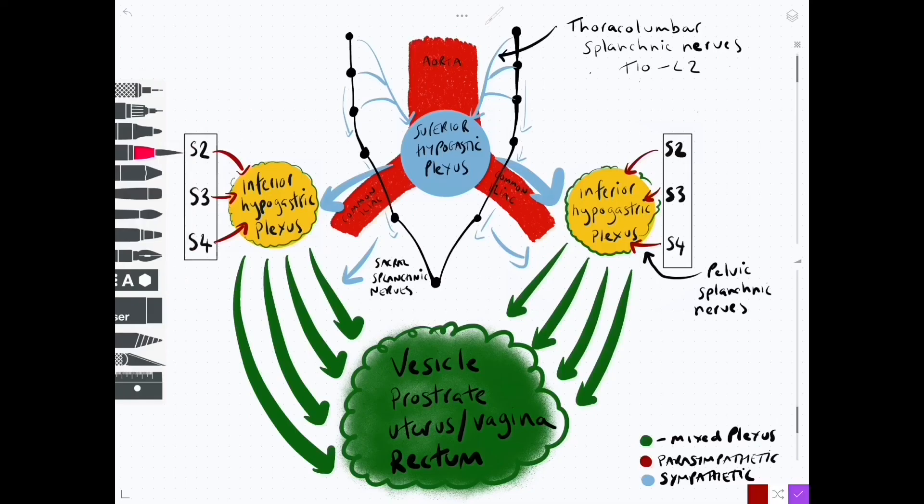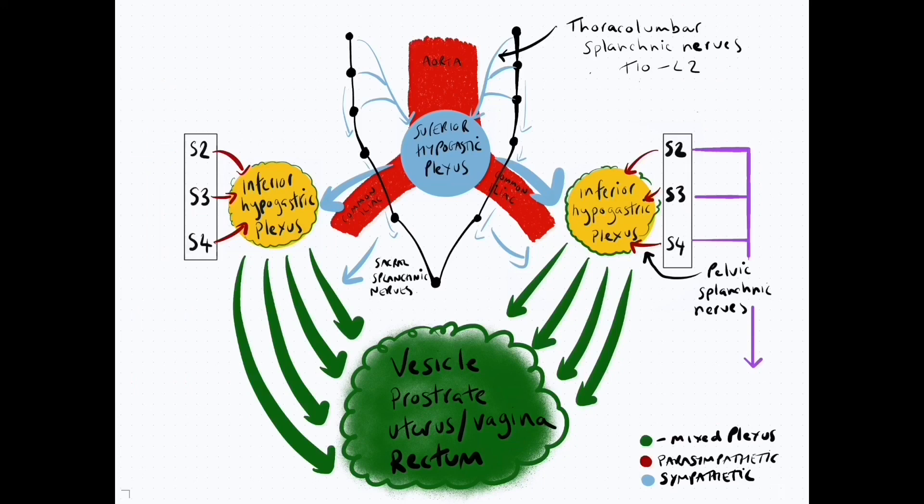Of course coming from the sympathetic chain would also be small gray rami communicantes to allow the sympathetic nerves to travel into somatic nerves that would predominantly be going to the perineum and to the lower limb. We also mustn't forget the important contribution from S2, S3, S4 which is the pudendal nerve, a somatic nerve involved in innervating erectile tissue and key structures within the perineum.